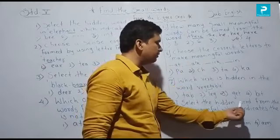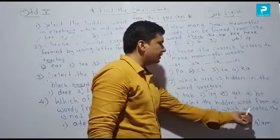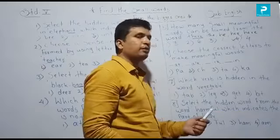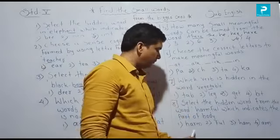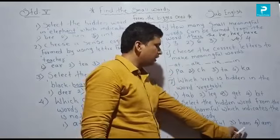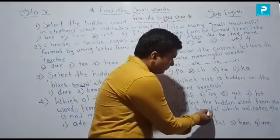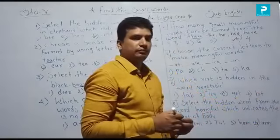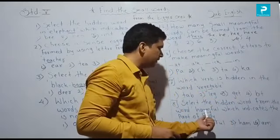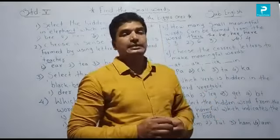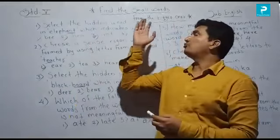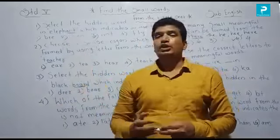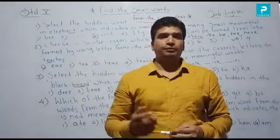Last question: Select the hidden word from the word 'harmful' which indicates a part of the body. The options are: option one, option two 'full,' option three 'hand,' and option four 'arm.' Where is 'arm' in 'harmful'? Option four — 'arm' — A-R-M, which is a body part, is hidden in 'harmful.' So these are the questions on finding small words from bigger ones. If you know all the words and their meanings, you can easily solve all questions based on this topic.